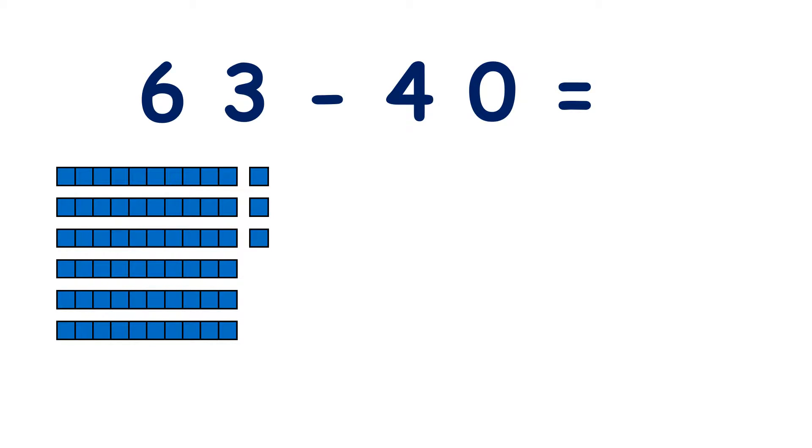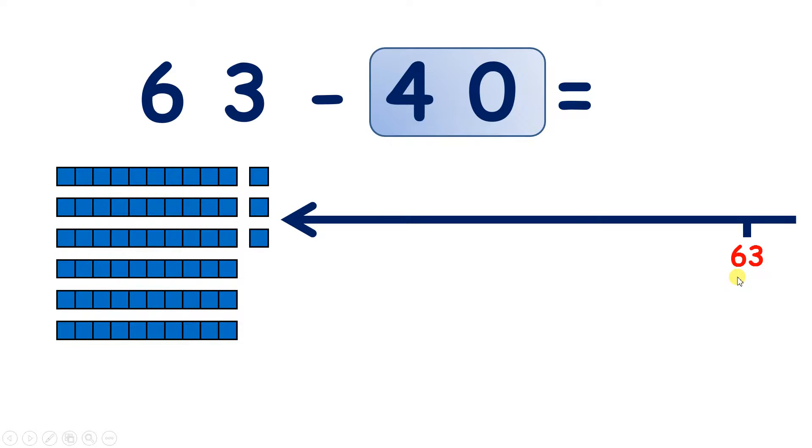63 minus 40. So we start with 6 tens and 3 units and we're subtracting 40. So we can place 63 at the end of our number line because that's the number we are subtracting from. And we're subtracting 40, so we're going to be taking away 4 tens.